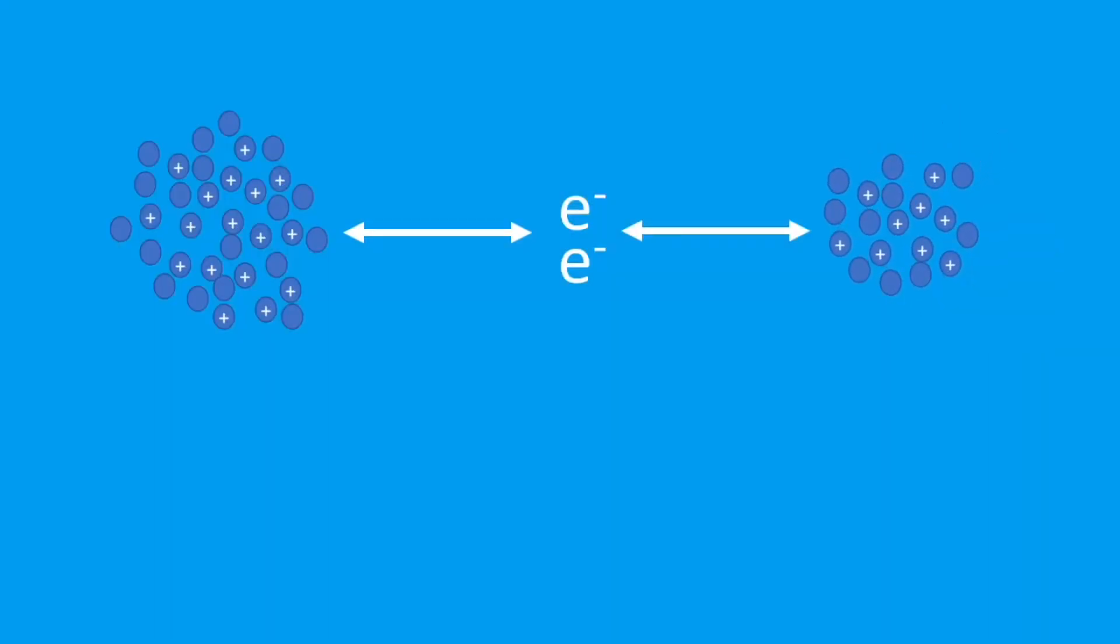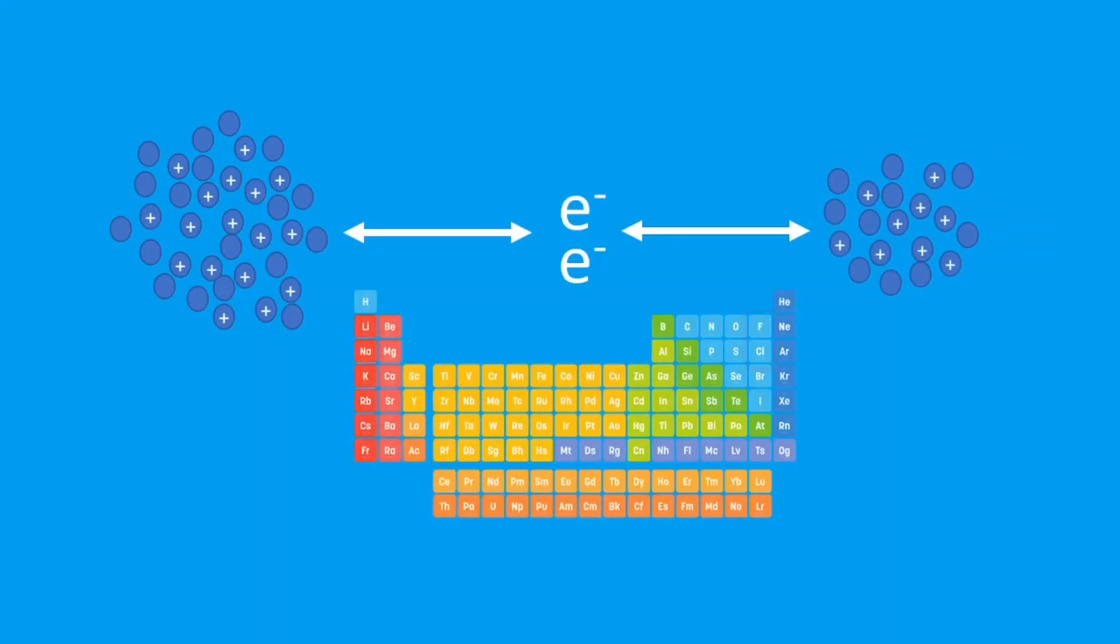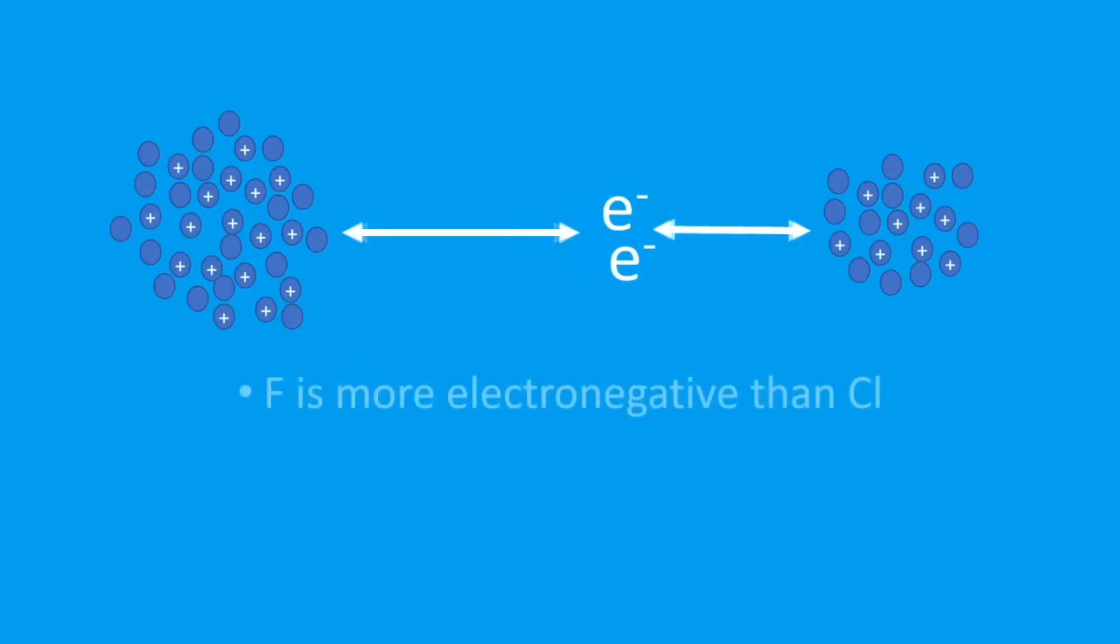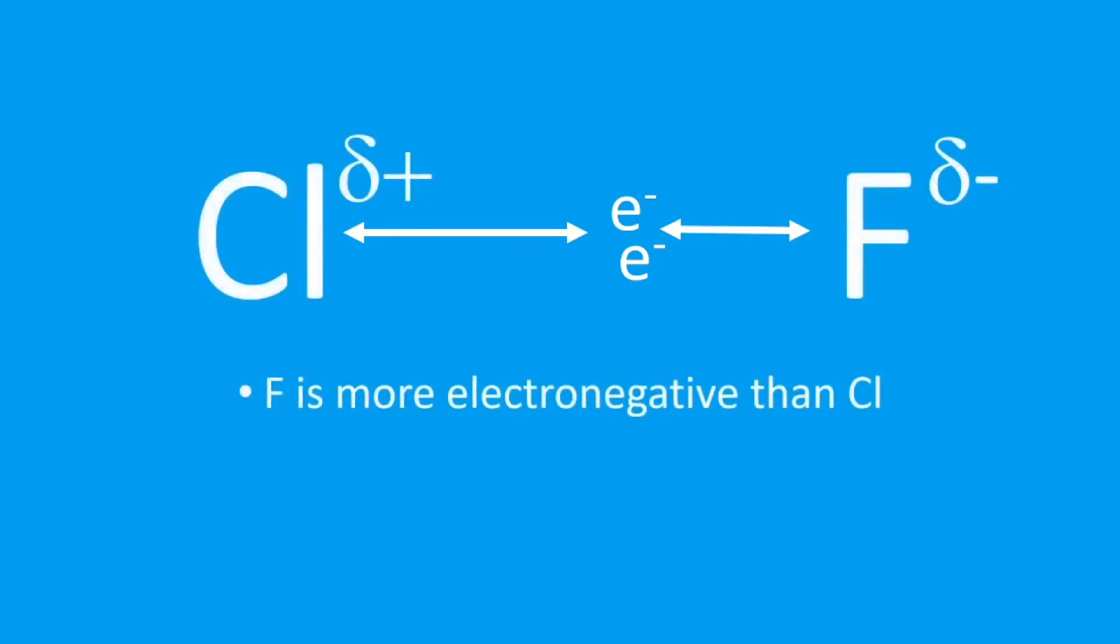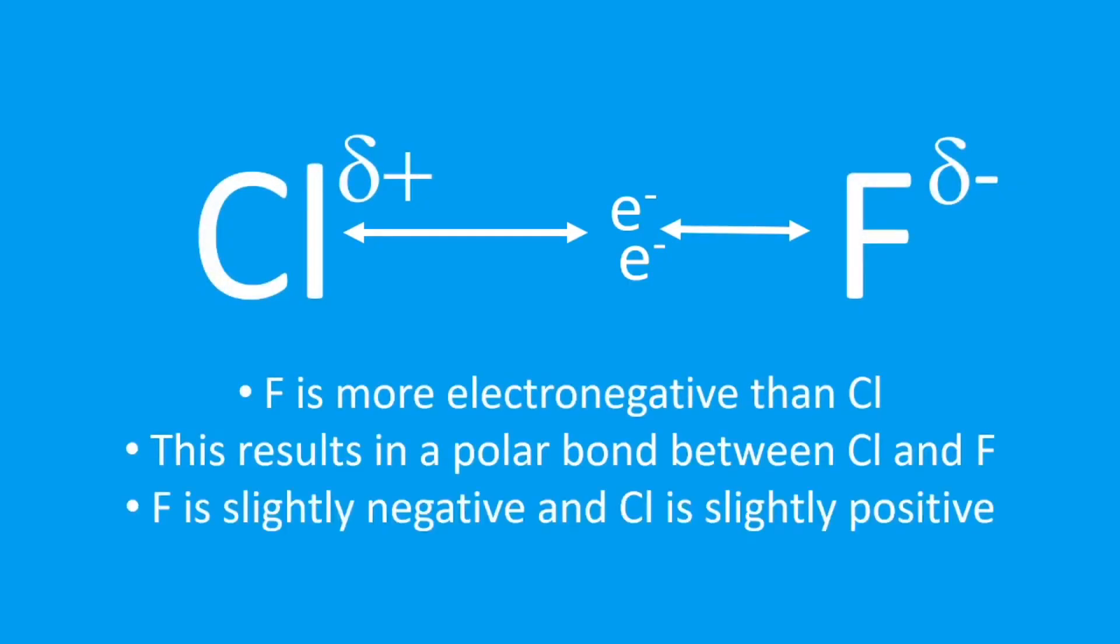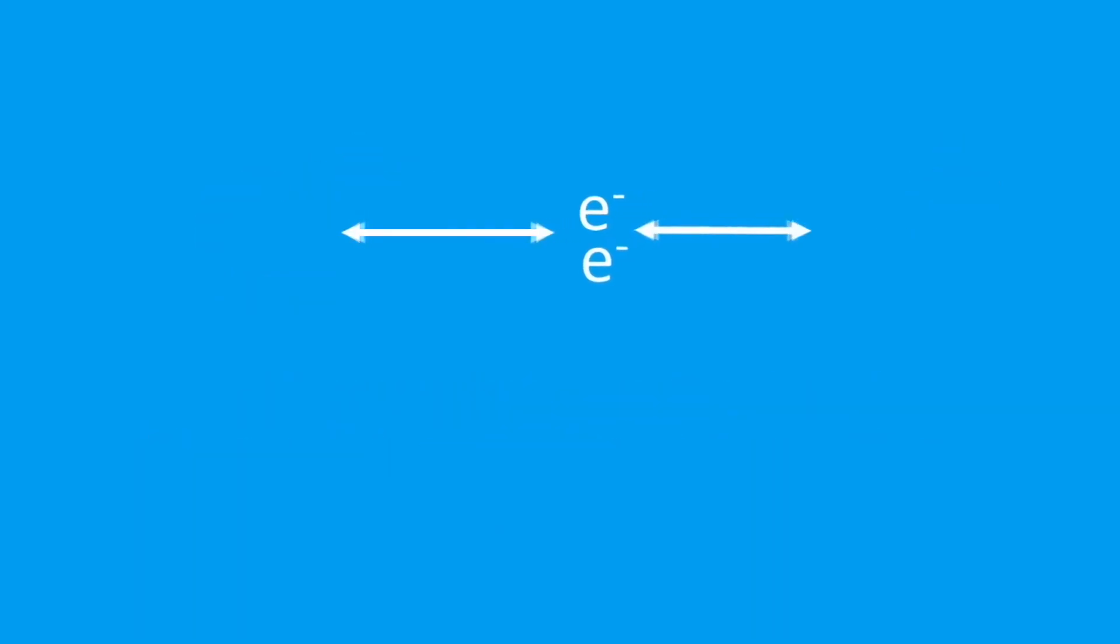So what if the atoms were different in this covalent bond? Let's look at fluorine and chlorine. The atom on the right is now fluorine, the atom on the left is chlorine. Fluorine is more electronegative because it's above chlorine in the periodic table, so those electrons are pulled closer to the fluorine. This means we have a polar bond between the chlorine and the fluorine. The F is slightly negative and the chlorine is slightly positive - that delta symbol stands for slightly.